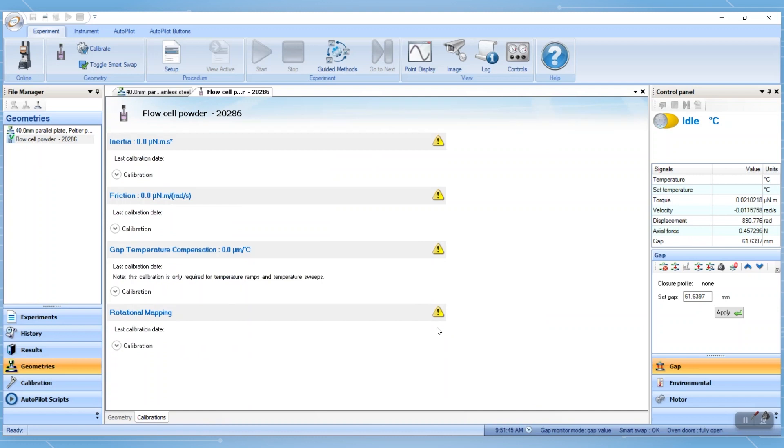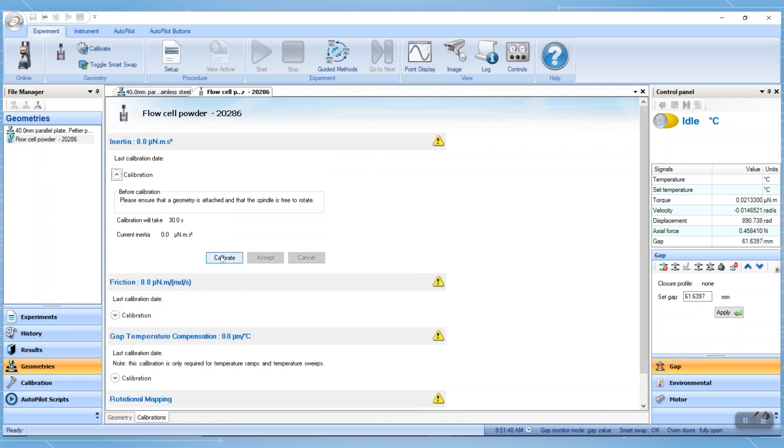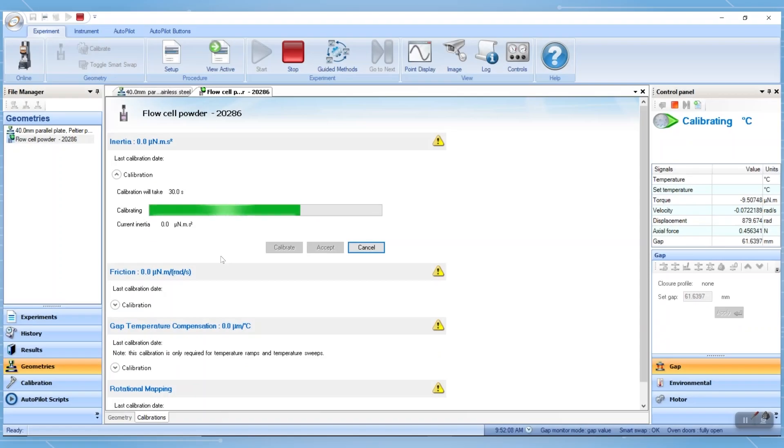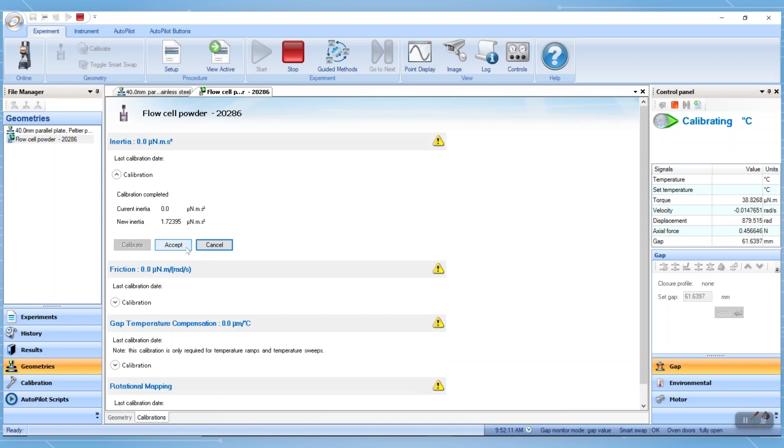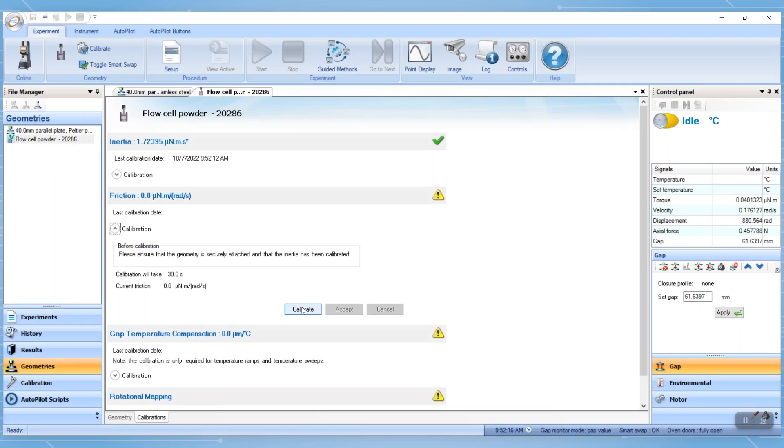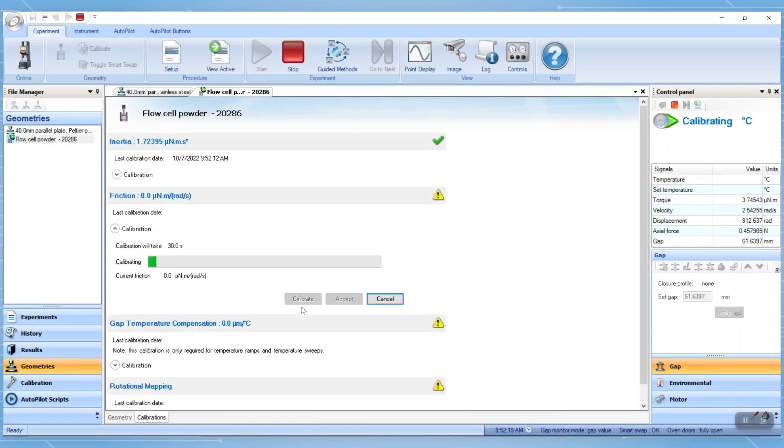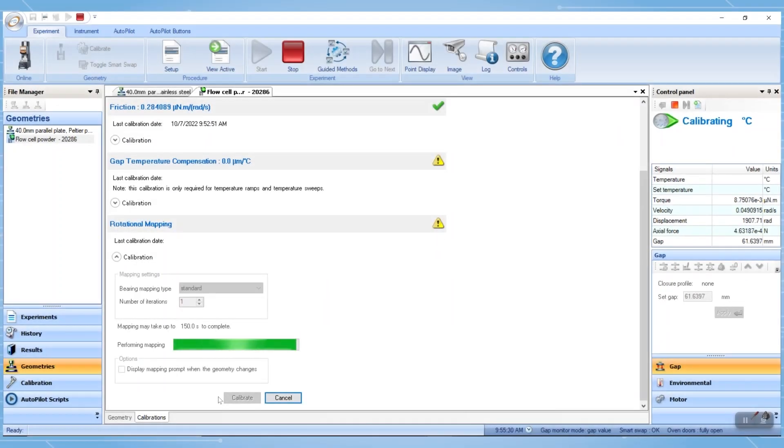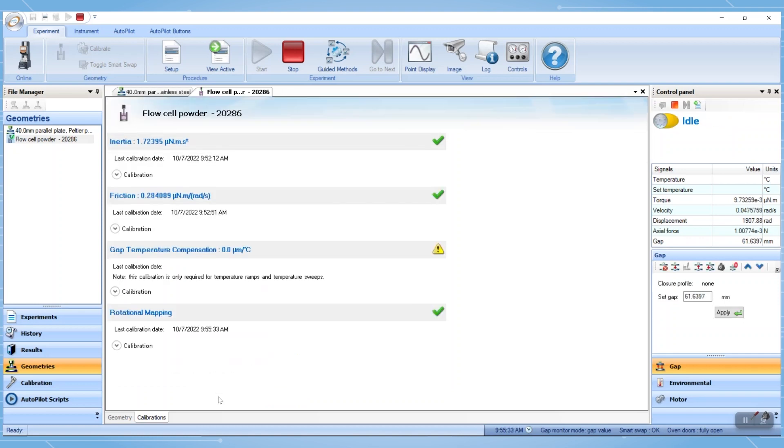Next, perform the geometry inertia, friction, and rotational mapping. The geometry inertia calibration is used to correct for the non-zero geometry moment of inertia. The friction calibration is used to correct for residual friction. Rotational mapping maps small variations in behavior around one revolution of the shaft.